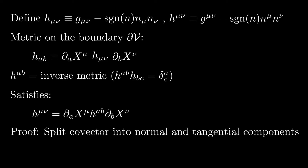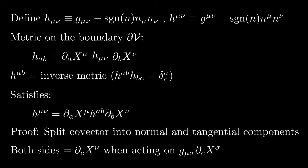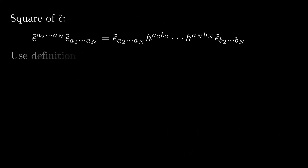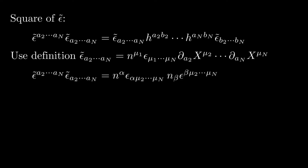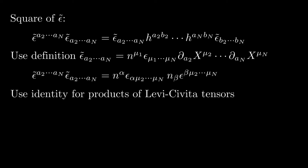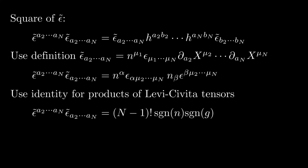Any covector can be split into a component normal to the boundary, proportional to the normal n, and a tangential component that's a linear combination of covectors g-mu-sigma times partial-c x-sigma. It's not difficult to see that both sides give 0 when acting on the normal n, and when acting on the tangent covector g-mu-sigma partial-c x-sigma, both sides give partial-c x-nu. Now let's compute the square of epsilon-tilde. Using the definition of epsilon-tilde and the identity for the product of Levi-Civita tensors, we find that epsilon-tilde squared equals n-minus-1 factorial times the sign of n times the sign of g.